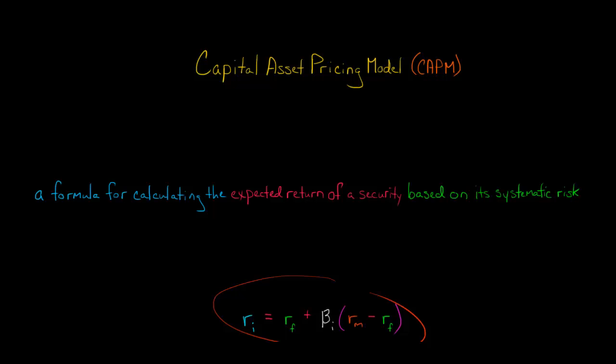Here's our formula. The expected return of a security, let's say security i, so we've got R sub i. The return of security i is equal to the risk-free rate of return. That's the rate of return you would earn on an investment that has zero risk. For example, a three-month U.S. Treasury bill. Let's say the rate of return on that was 1.25%, then that would be your risk-free rate.